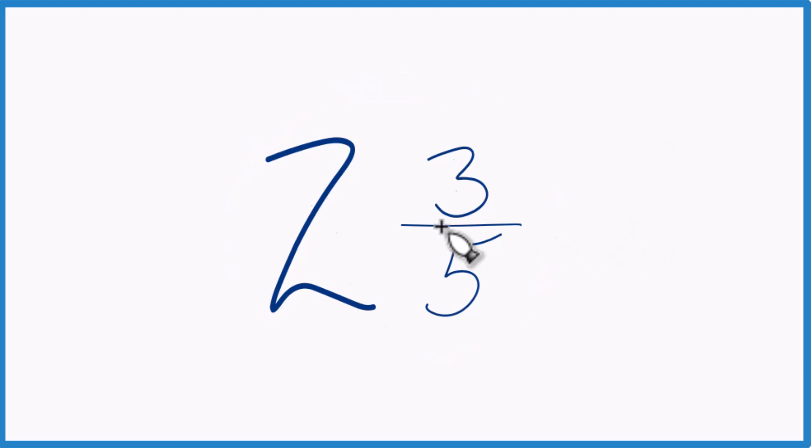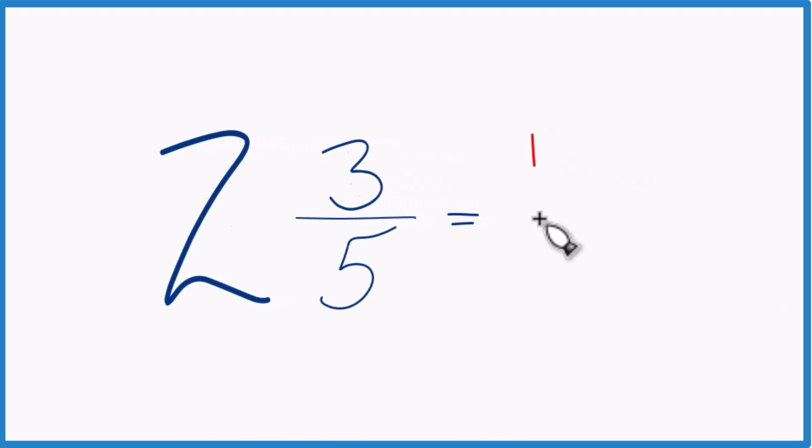So here's how you do it. You take 2, the whole number, times 5, that's 10, 10 plus 3, 13. That becomes your numerator, and you just bring the 5 across.